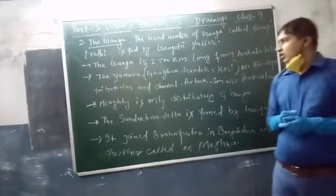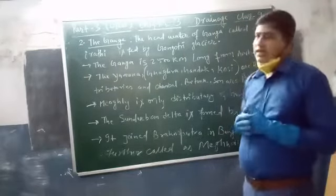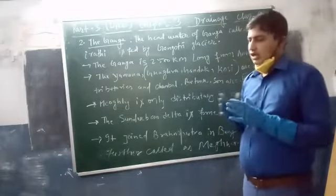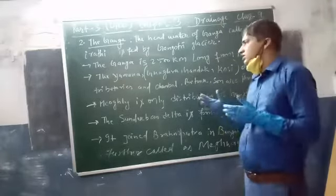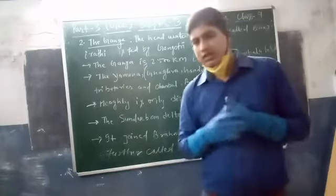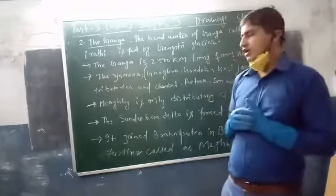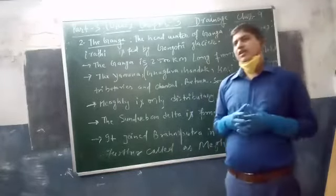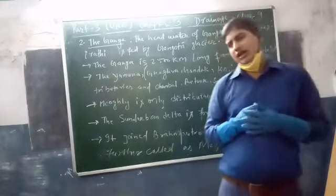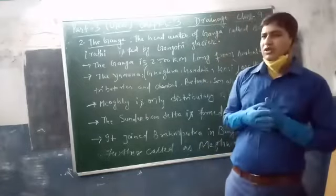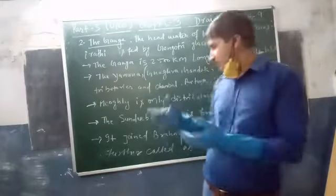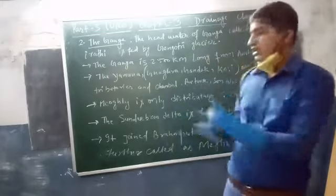Before going into Bangladesh, at West Bengal, it has a distributary. That distributary is called Hooghly — the only distributary of Ganga. Many rivers that are coming and submitting into Ganga are the tributaries of Ganga.